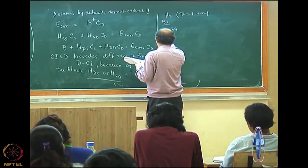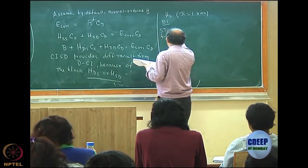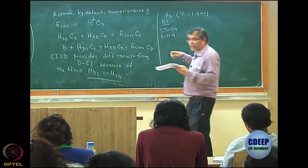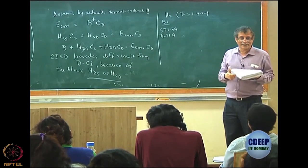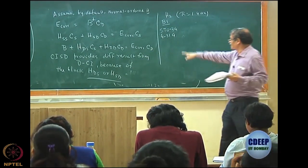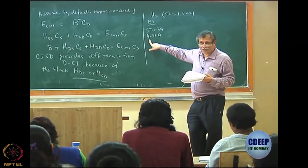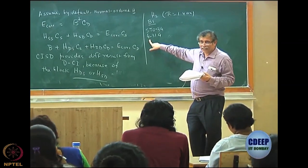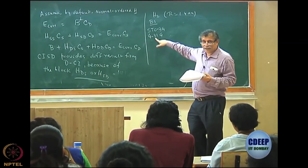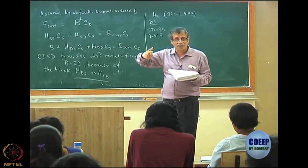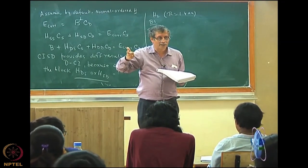We also have 4-31G — remember this for exams. In 4-31G, you have a core orbital expanded in terms of four Gaussians, a split valence with the first component expanded in three Gaussians and the second in one Gaussian.